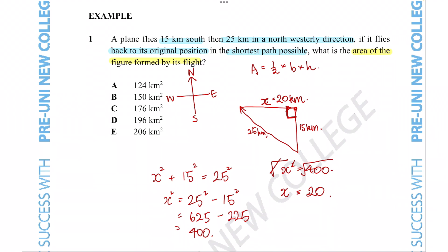So that's the difficult part of the question done. All you need to do now is then use the formula for the area of a triangle to figure out the answer. So half times by 20 kilometres times by 15 kilometres, that's going to equal to 150 kilometres squared. So the correct answer is going to be option B.